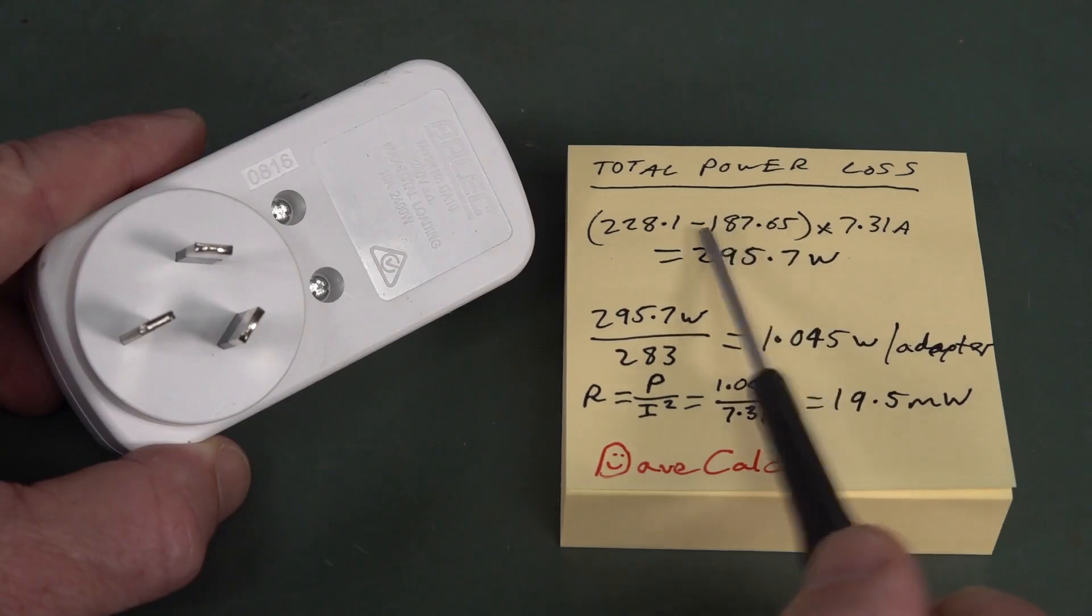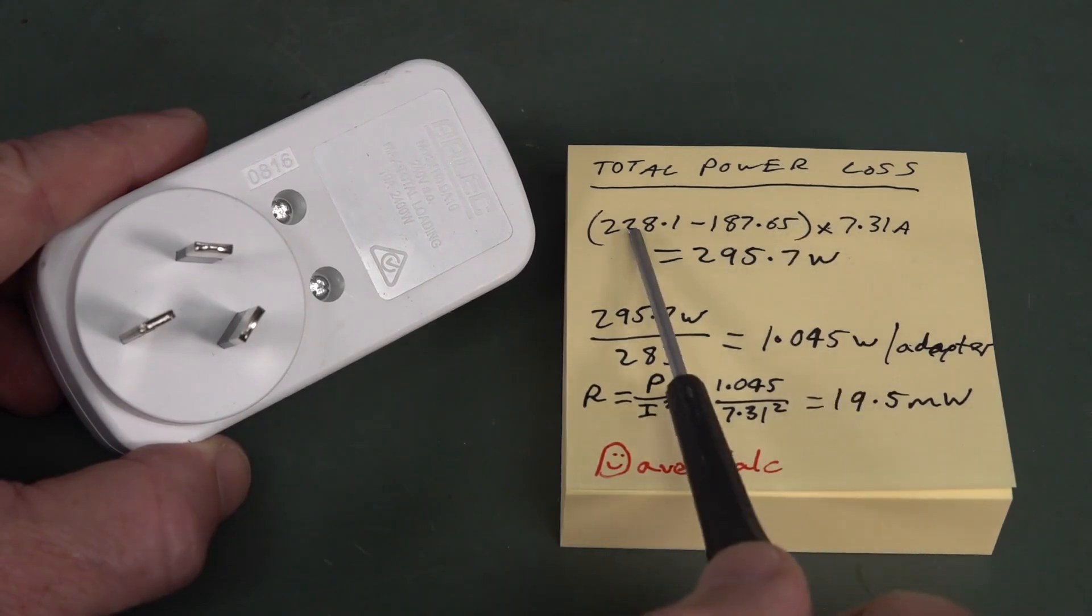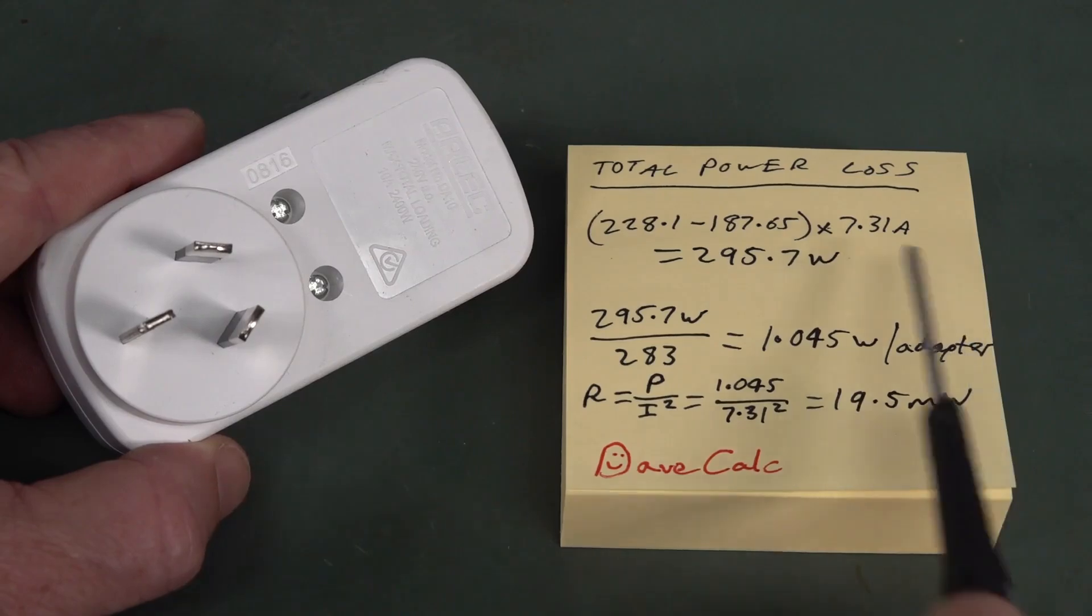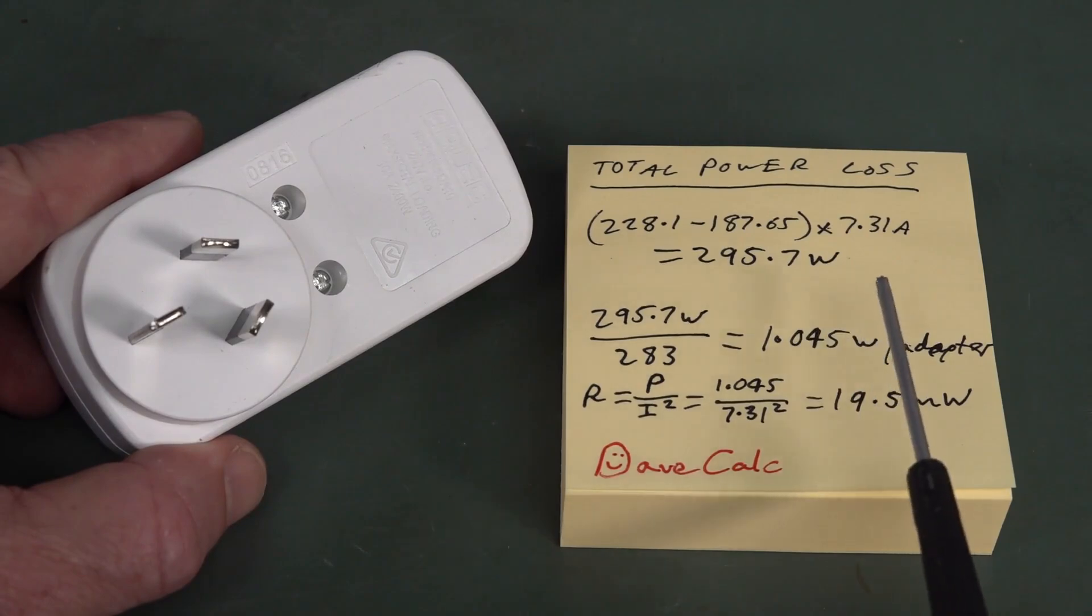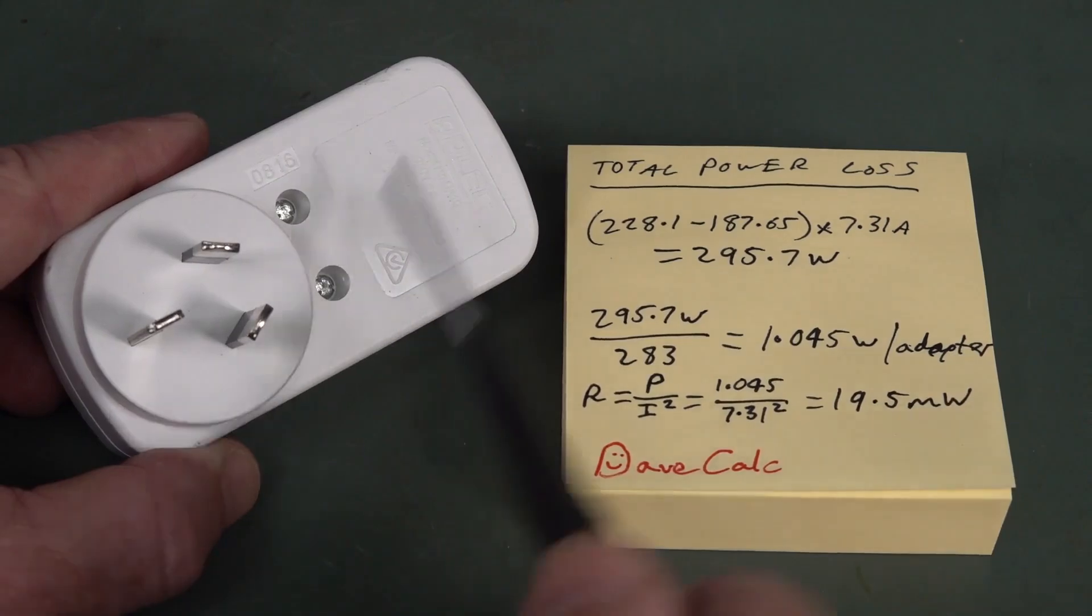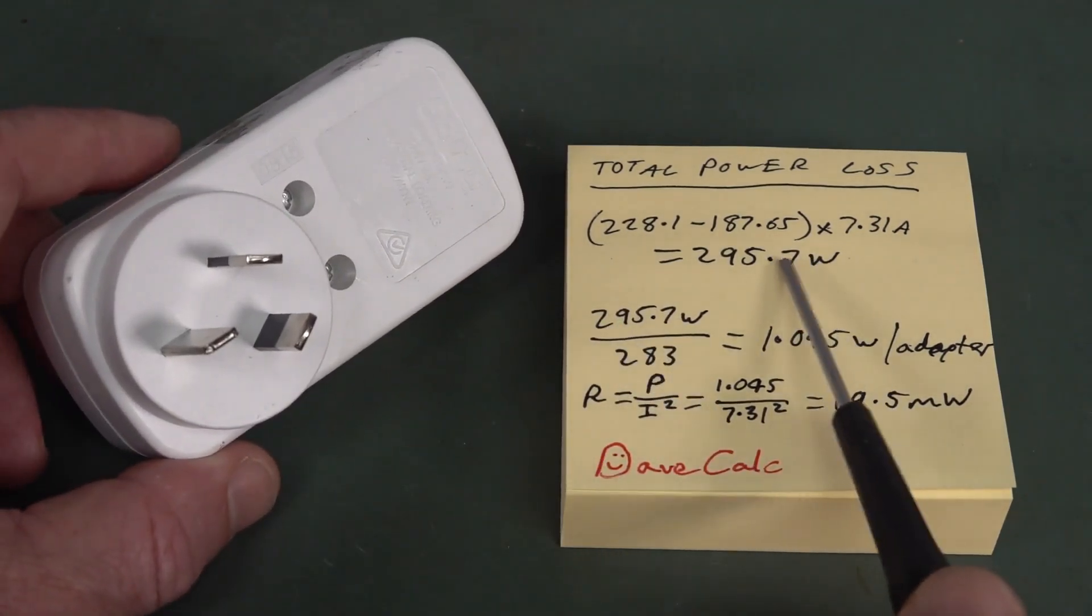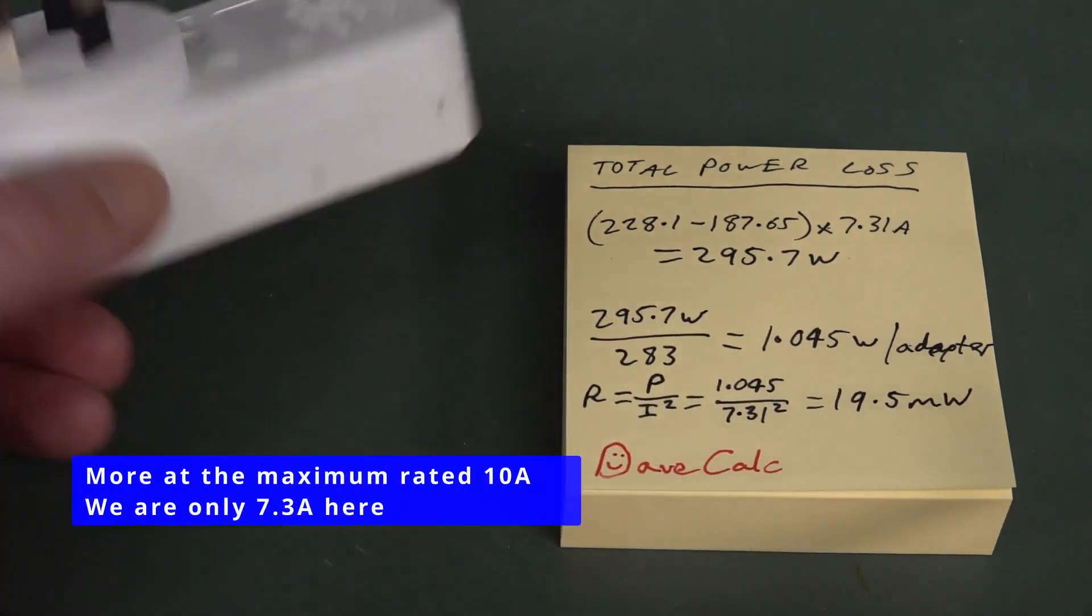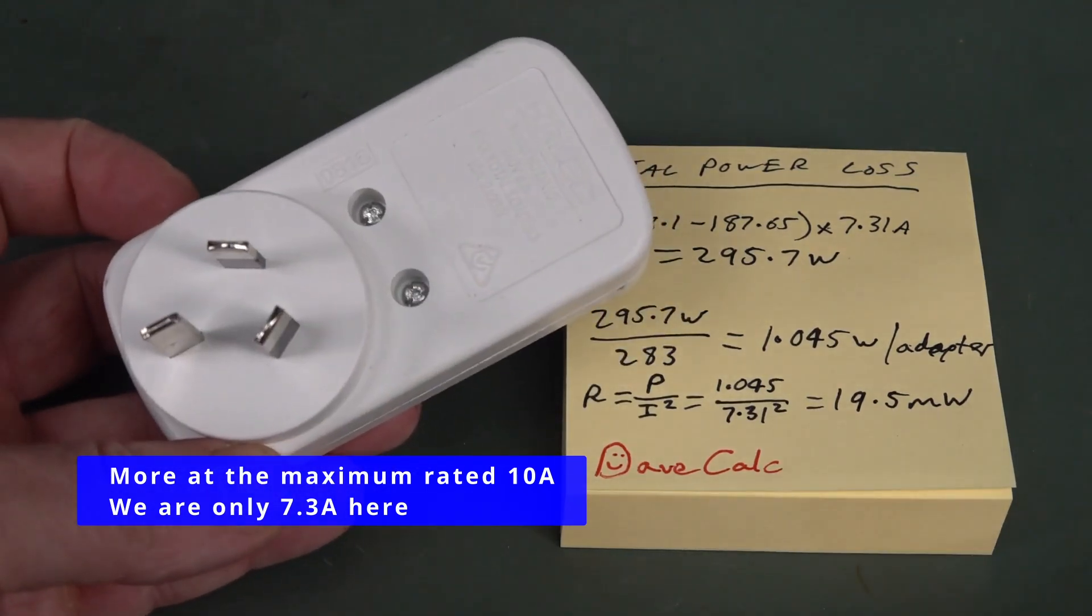Anyway, the total power loss of 283 of these in series is the input voltage. Because it was 240, but then we had some drop across that 20-odd meters of those five extension cords plugged together. So the input voltage to the first one of these was 228.1. So you've got to subtract the output voltage, which was 187.65. And then, that's your voltage drop, and V times I gives you your power, so times 7.31 amps, 295.7 watts.